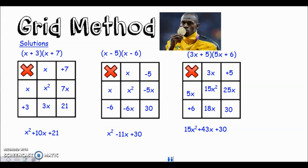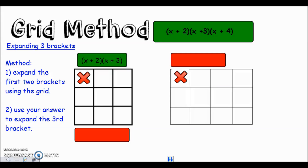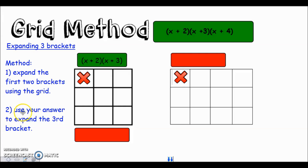Let's look at using the grid method to expand three brackets. Here are the three brackets at the top. The method is: expand the first two brackets using the grid method in the normal way, then use your answer to expand the third bracket. Let's start with the first two brackets, put them into the grid, work out the answer, and see what we get.